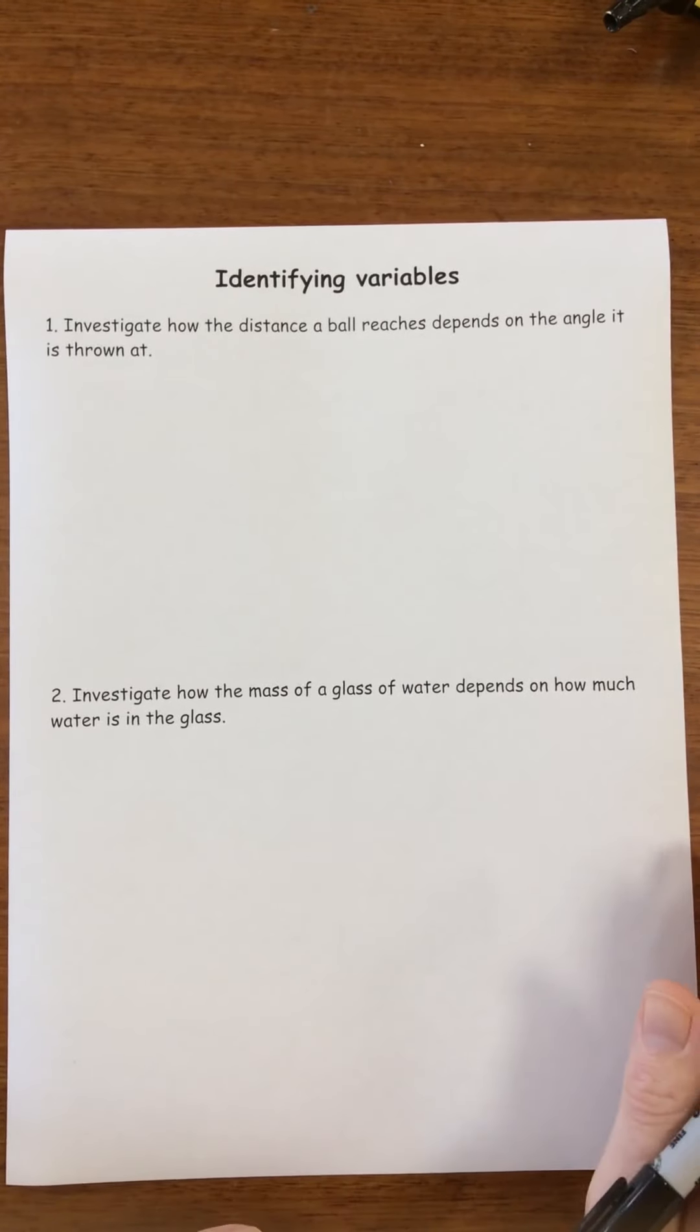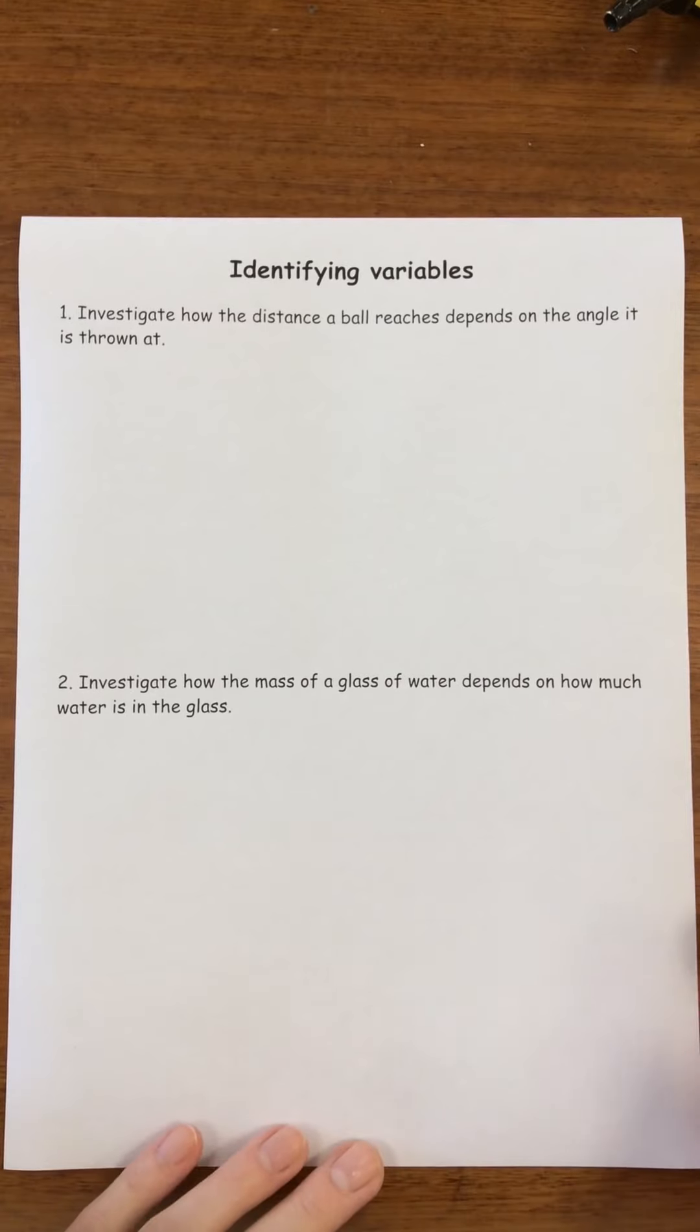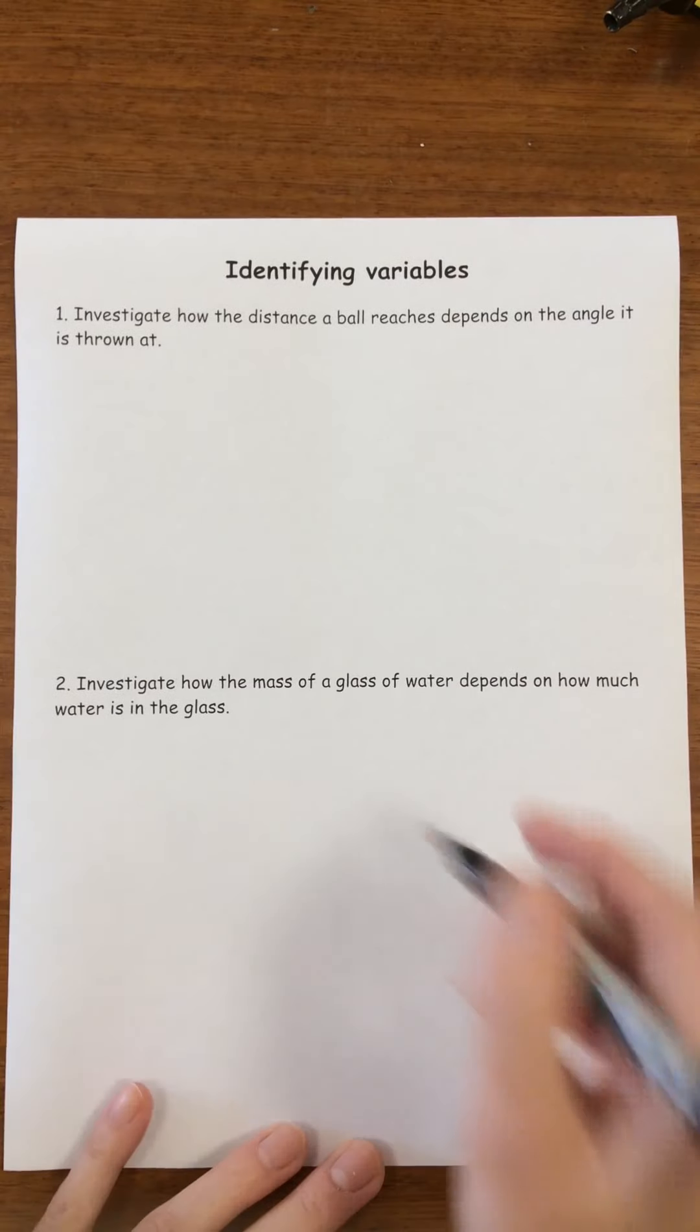In this video we're going to talk about choosing variables. Before you start, it's a good idea to imagine the experiment that we're talking about. In investigation one it says investigate how the distance a ball reaches depends on the angle it's thrown at.